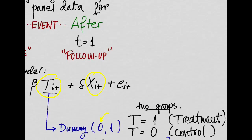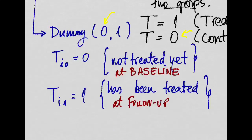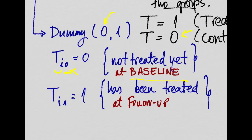The treatment is basically a dummy variable that takes the value of 0 or 1, so we'll have two groups: the treatment group, which is when t takes the value of 1, and the control group, which is when t equals 0. At baseline, both groups will have t equals 0 because none would be vaccinated before the treatment takes place. We denote t_i0 equals 0 if individual i has not been treated yet at baseline, and t_i1 equals 1 if the individual has been treated at follow-up, that is at time 1.